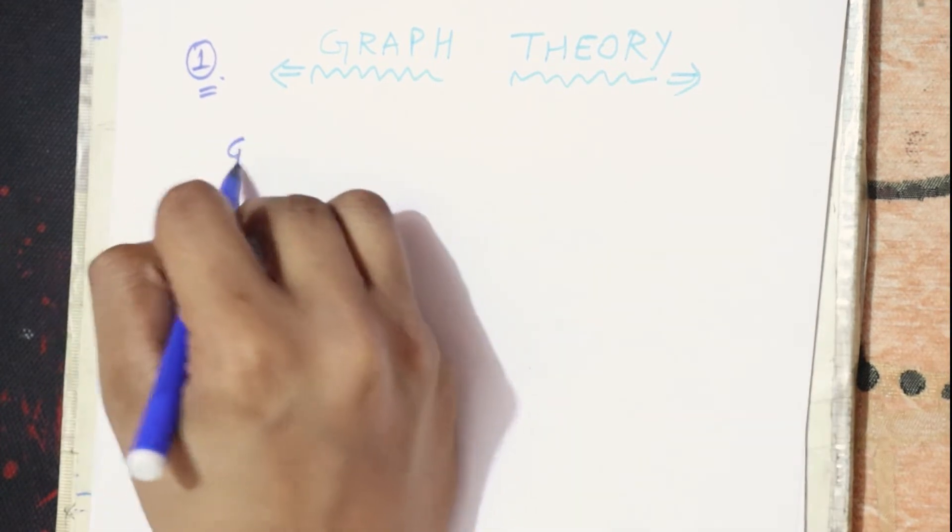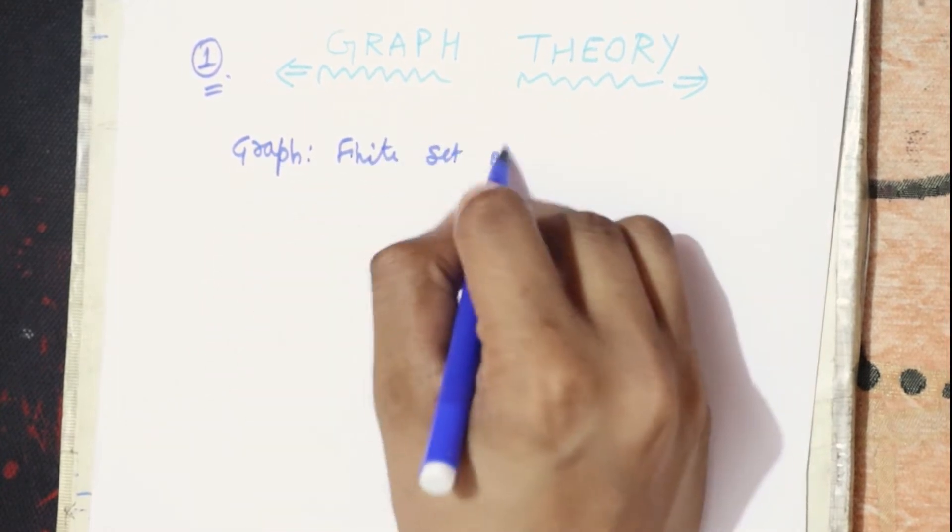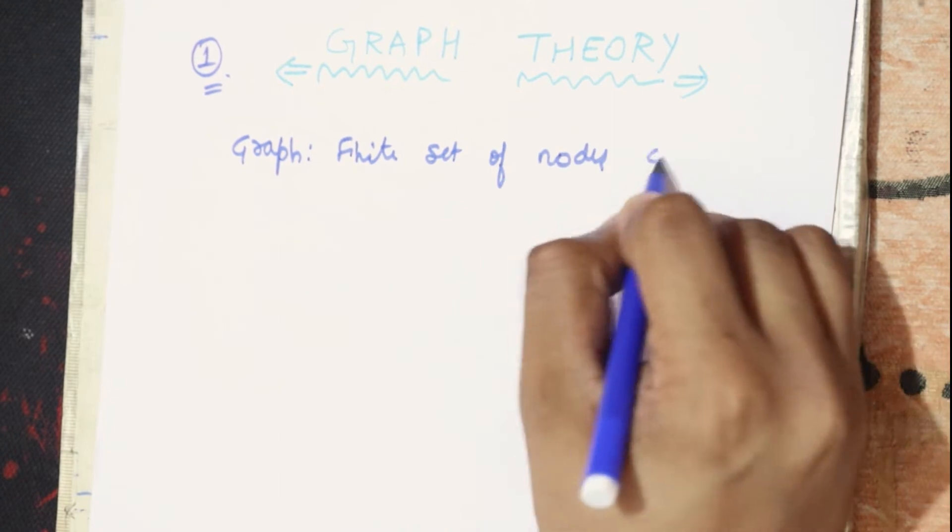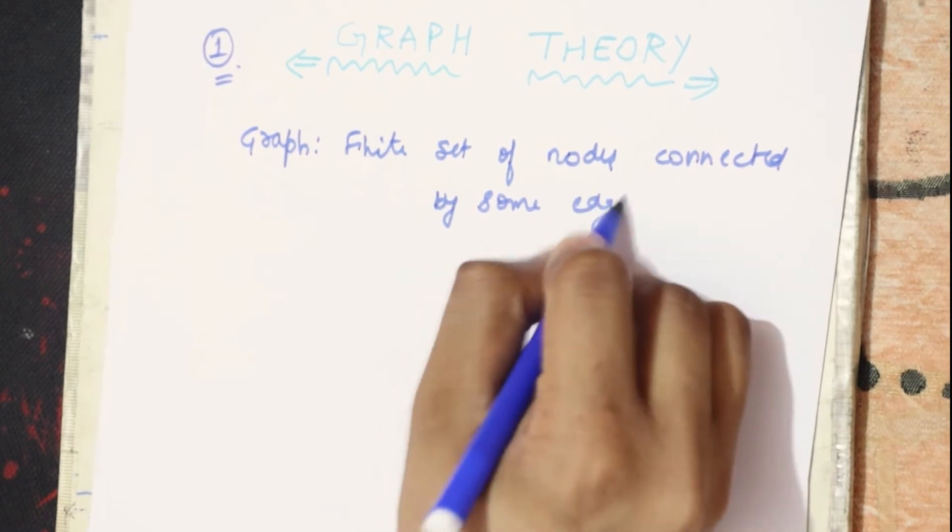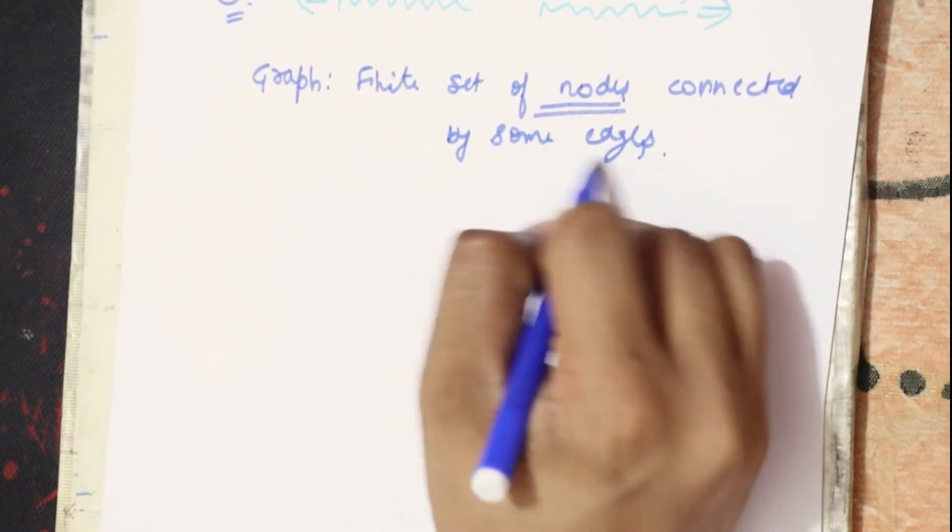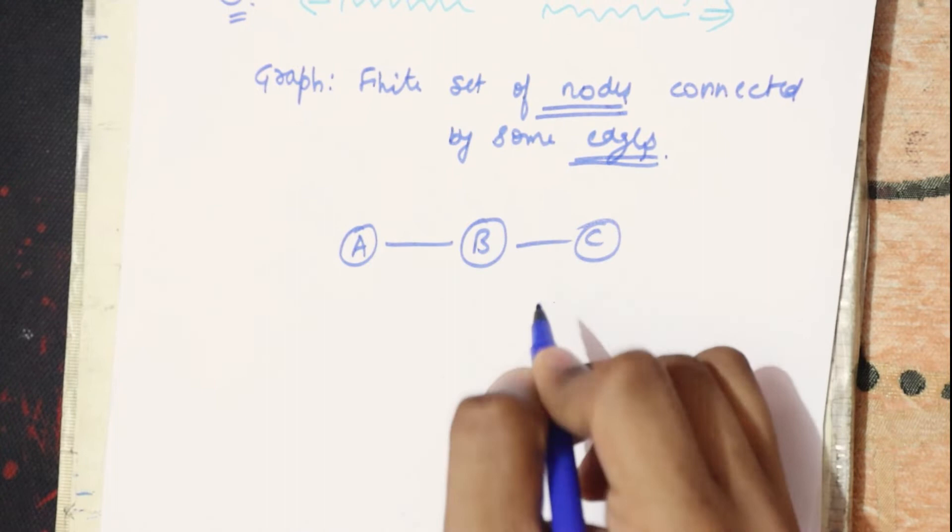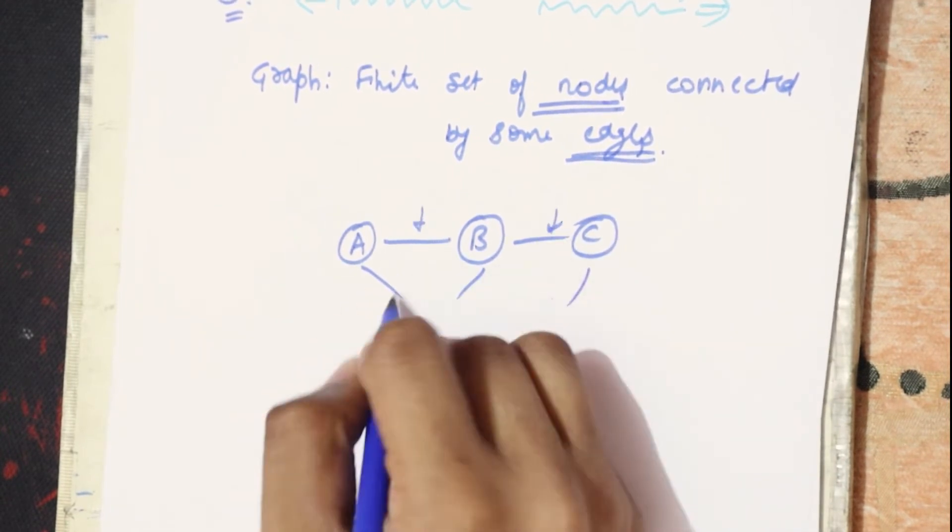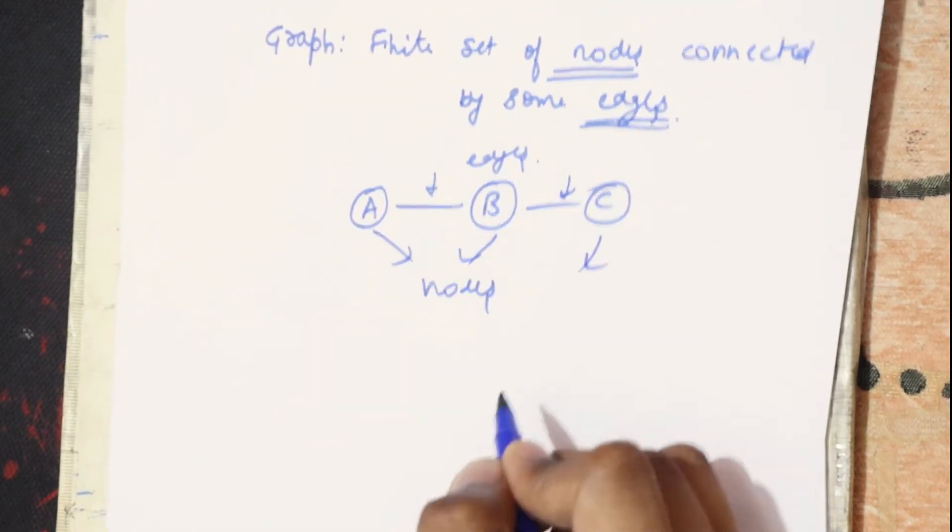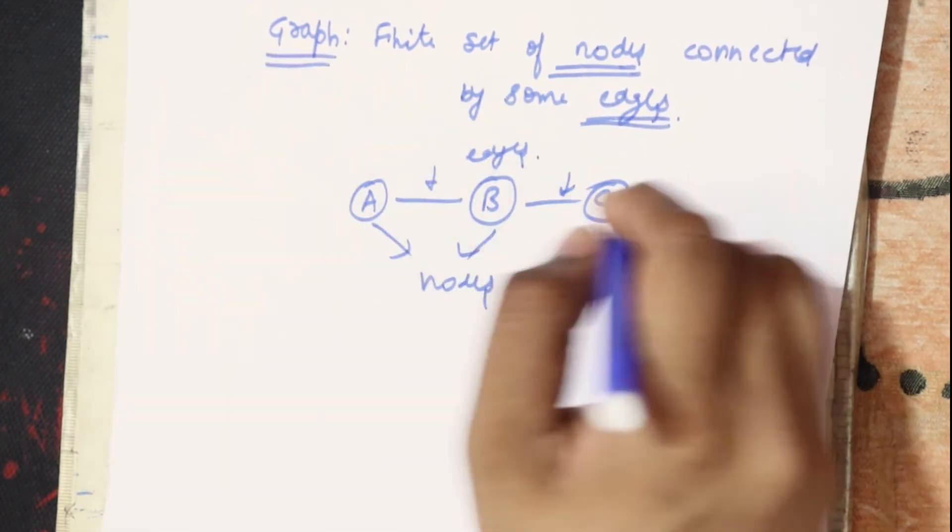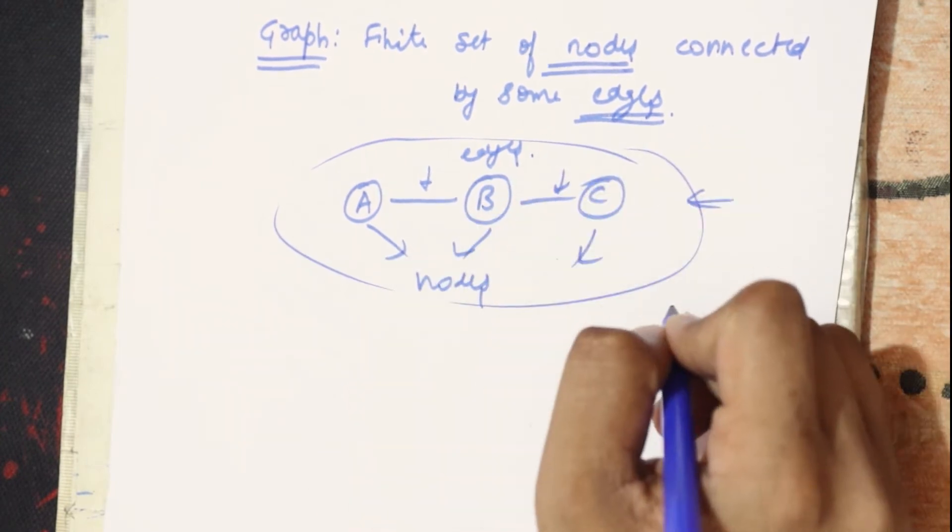First, what is a graph? A graph is a finite set of nodes connected by some edges. You might ask what are nodes and what are edges. Suppose I represent A, B, C - these are nodes and these are edges. The complete thing which includes nodes and edges is a graph.